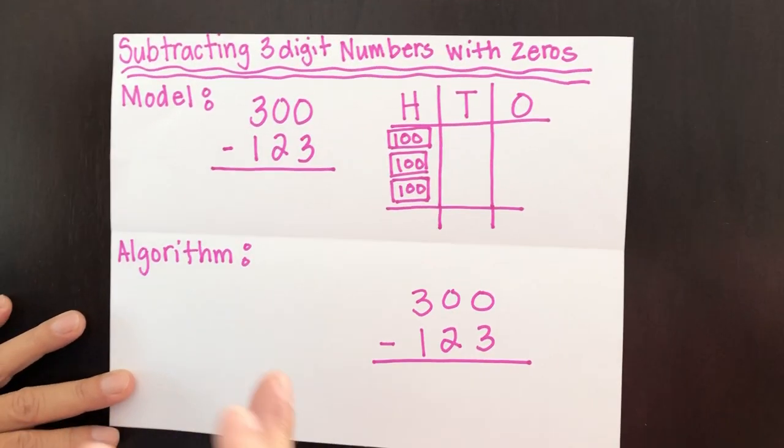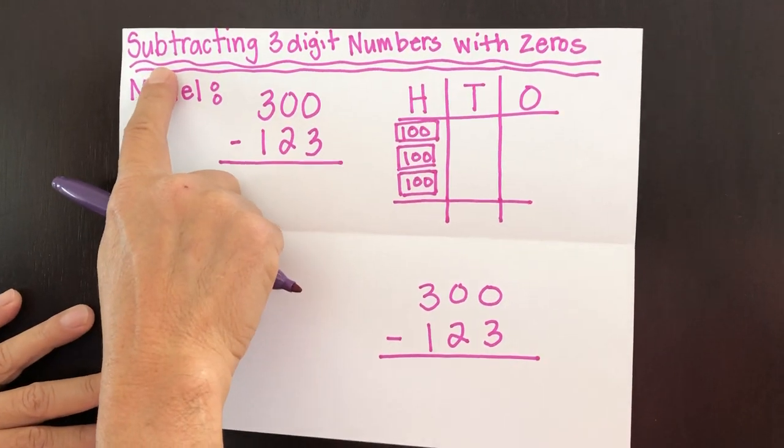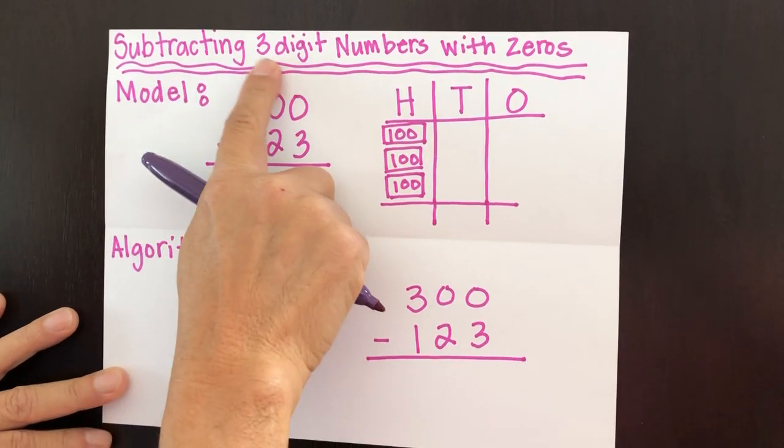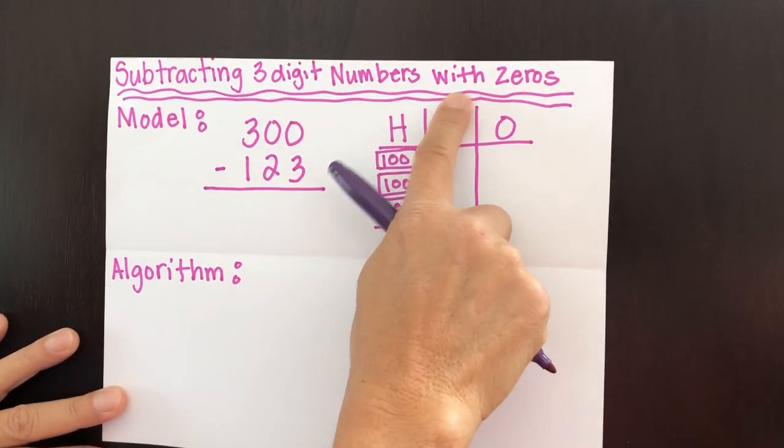Okay, boys and girls, so for today's lesson, what we're going to be doing is exactly what the title says. We're going to be subtracting three-digit numbers with zeros.